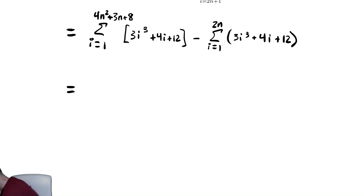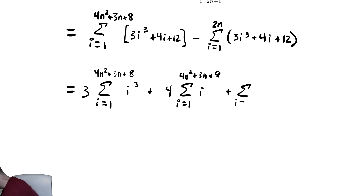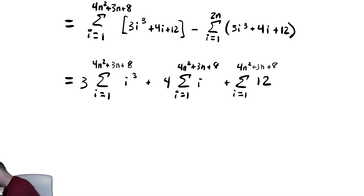Distributing the summation, we have 3 times the sum from i equals 1 to 4n squared plus 3n plus 8 of i cubed, plus 4 times the sum from i equals 1 to 4n squared plus 3n plus 8 of i, plus the sum from i equals 1 to 4n squared plus 3n plus 8 of 12. That's the first summation dealt with.